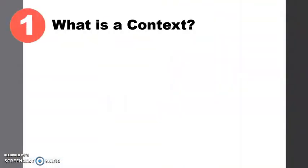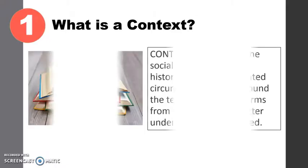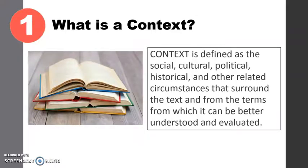This backdrop is known as the context of the text. Being a critical reader also involves understanding that texts are always developed with a certain context. A text is neither written nor read in a vacuum — its meaning and interpretation are affected by a given set of circumstances. Thus, context is defined as the social, cultural, political, historical, and other related circumstances that surround the text and from which it can be better understood.